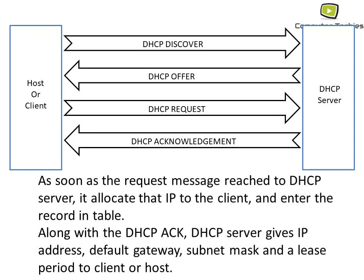Once the Discover is complete, the DHCP server takes an IP address from its pool and sends an Offer to the host: 'Hey, I'm offering you this IP address — is it okay?' When the host receives the Offer, it replies 'Yes, the IP address is okay' and sends a Request asking the server to allocate that IP address. Finally, the Acknowledgement is the confirmation that the IP address is assigned to the host, along with the gateway, subnet mask, and lease period.